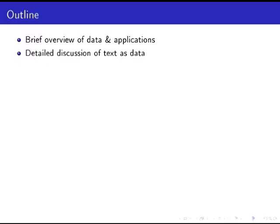What we want to do today is first give a brief overview of the kinds of large data sets and applications that people have used, not talking in detail about specific methods. Then we'll spend time going into detail about one specific data source: text. We'll look at ways these methods are applied to text and ways that text has been used in social science and economics.